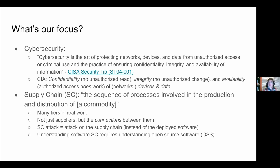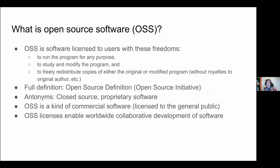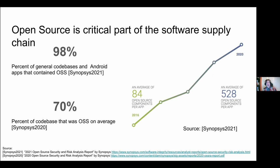Understanding software supply chains requires understanding open source software. Open source software is software licensed so that you can run it, study it, modify it, and freely redistribute it. Open source is a critical part of the software supply chain. 98% of code bases out there include open source, and in fact the majority of their code — on average, 70% of code bases — is actually open source software. Just a few years ago in 2016, the average number of open source components per application was 84; by 2020 it had risen to 528.